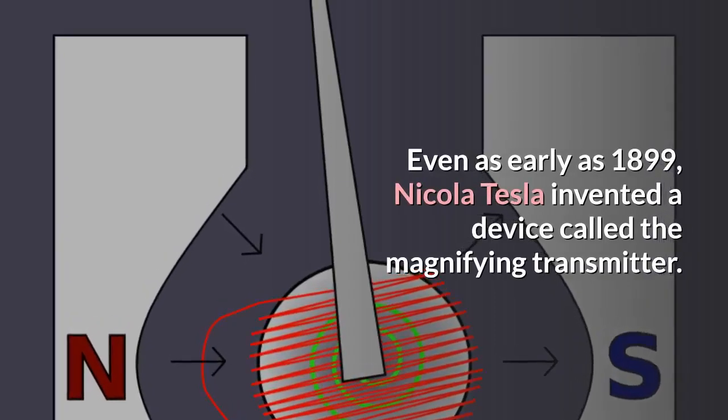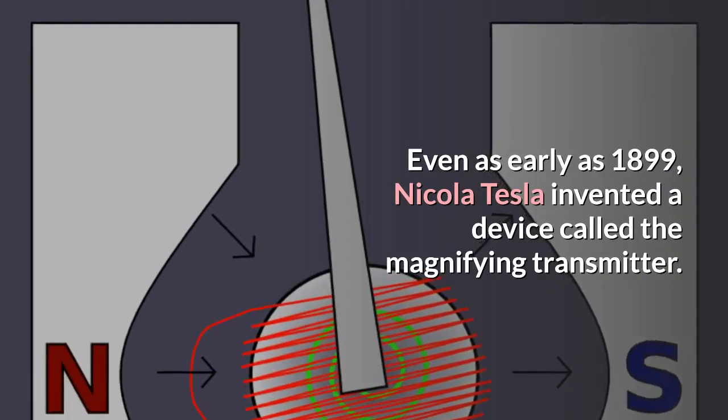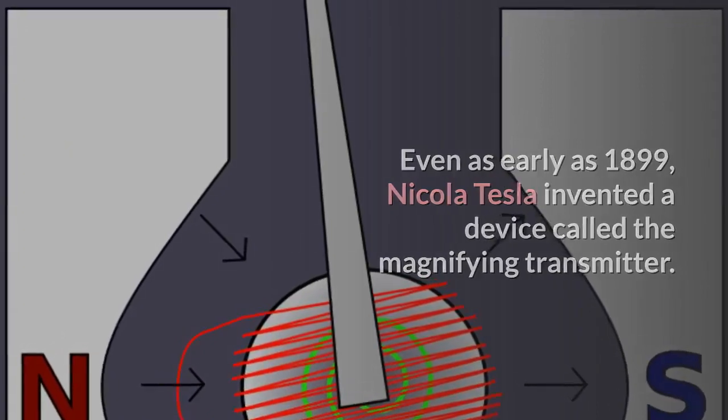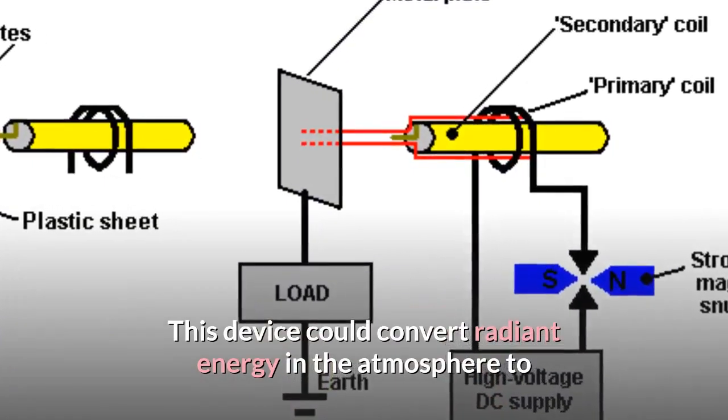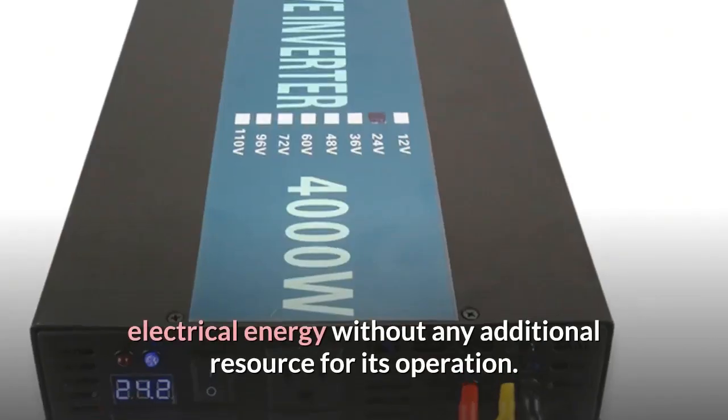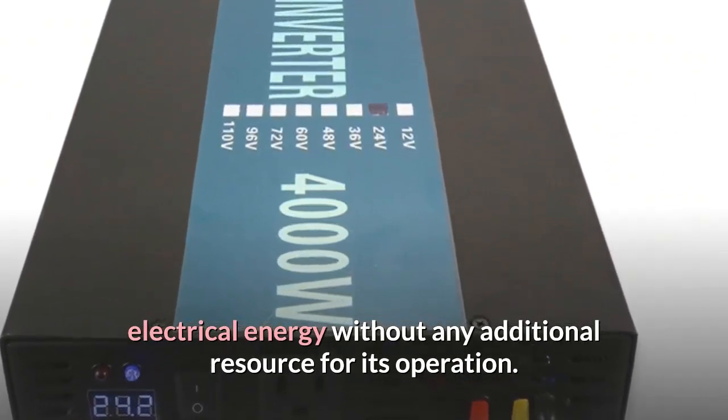Even as early as 1899, Nikola Tesla invented a device called the magnifying transmitter. This device could convert radiant energy in the atmosphere to electrical energy without any additional resource for its operation.